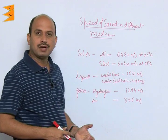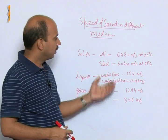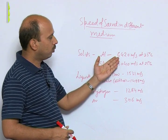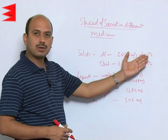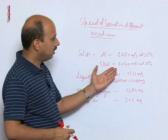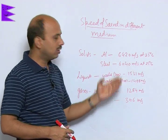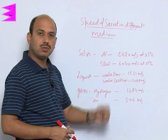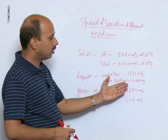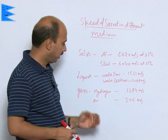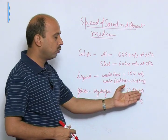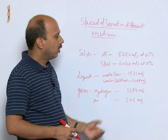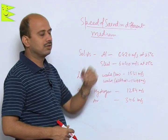See here, speed of sound in different media. If you take solids, aluminum has a speed of sound of 6420 meter per second at 25 degree Celsius. Steel has 6040 meter per second. For liquids, seawater is 1531 and distilled water is 1498 meter per second. Hydrogen is 1284 meter per second and in air it is 346 meter per second. All these speeds are at 25 degree Celsius.